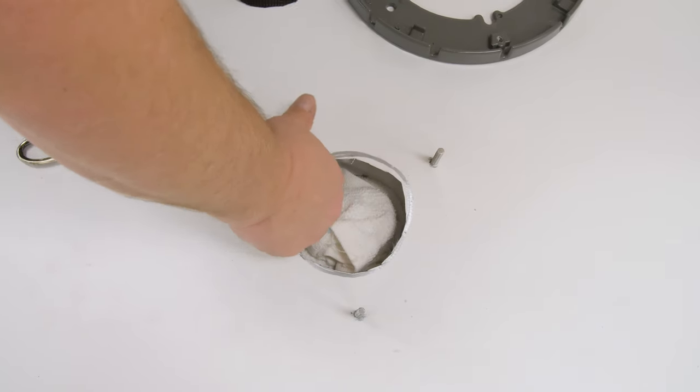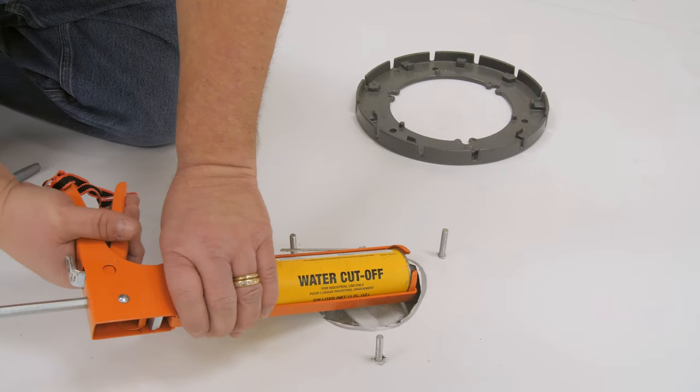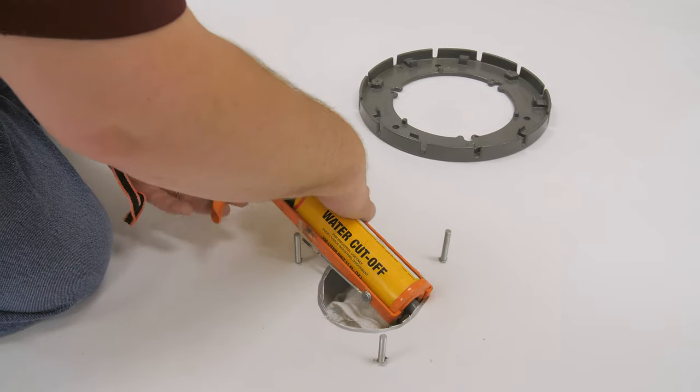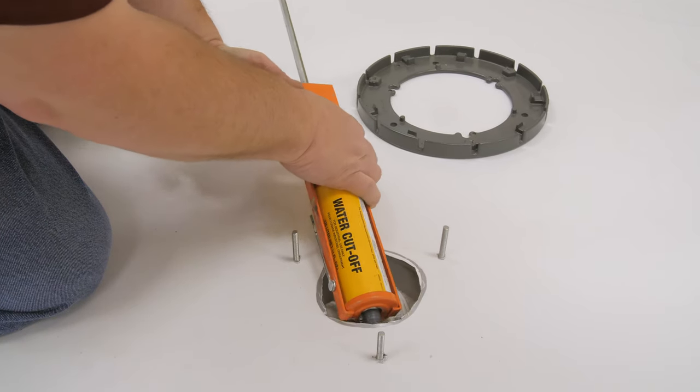Lift the membrane and apply an even bead of water cutoff mastic on top of the drain bowl, where the clamping ring will rest. Install an entire tube per roof drain.